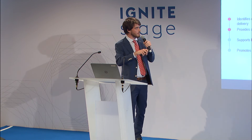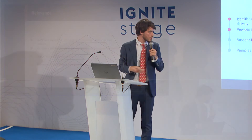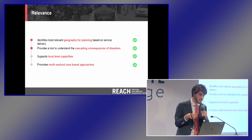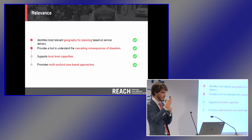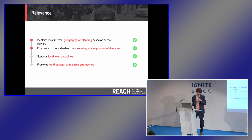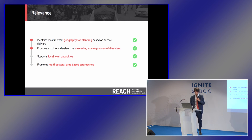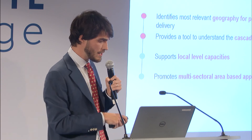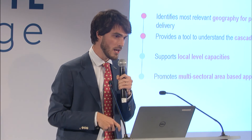The relevance of this approach is that it identifies the most relevant geography based on service delivery rather than administrative units. It provides a tool to understand the cascading consequences of crises, because the repercussions extend far beyond the actual affected area. By understanding where people organically access services, it strengthens the ability of aid planners to support local-level capacities. And finally, echoing a key message from the GAR 2019 launch — the importance of not thinking in silos — this approach, which looks at geography as the primary unit of analysis, promotes multi-sectoral area-based approaches.